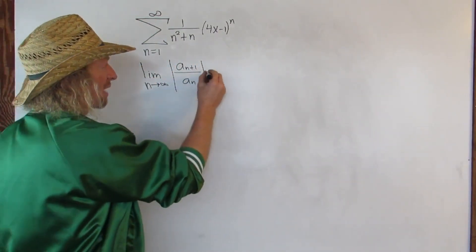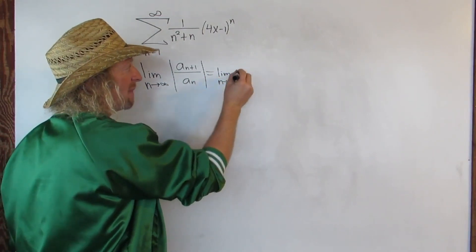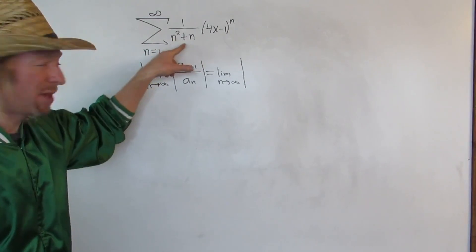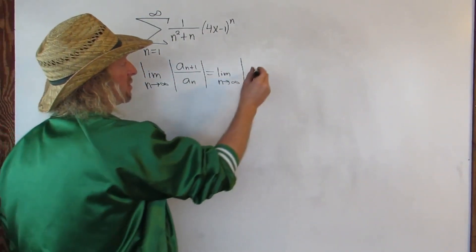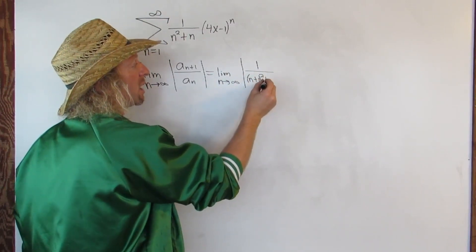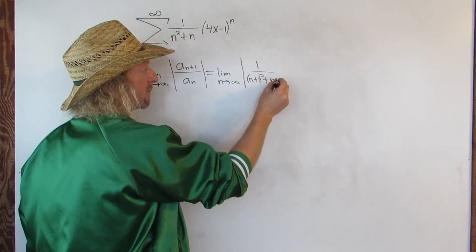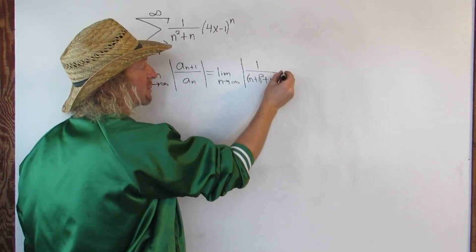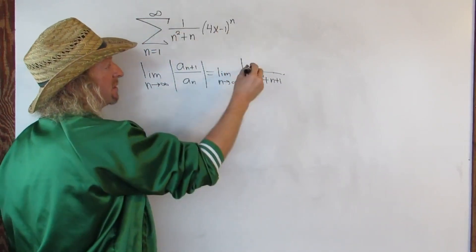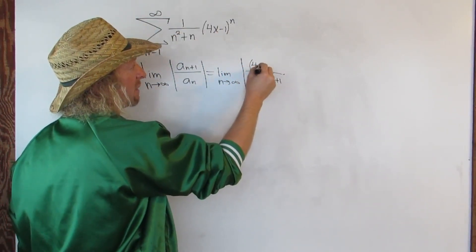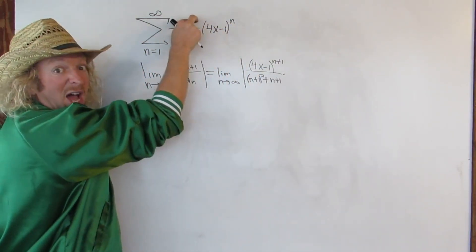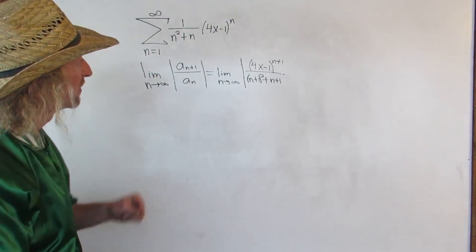So to do this, we have a limit. So we'll write that again. And then the way I do these is I first just replace all of the n's with n plus 1's. That's what a sub n plus 1 means. So it's 1 over, and then parentheses, n plus 1 squared, plus n plus 1. And then times, actually you can put this upstairs. This is the same as being up here. So this is 4x minus 1 to the n plus 1. This can be written with this piece up top. So it's the same thing.